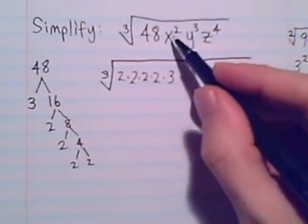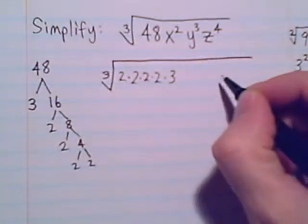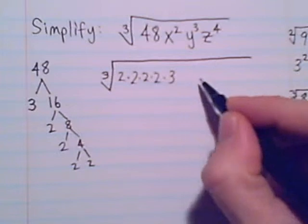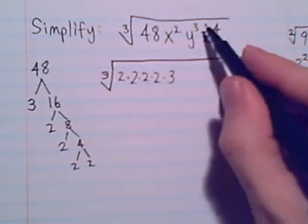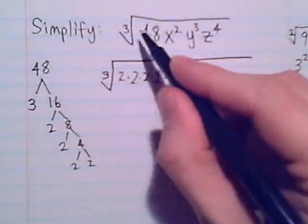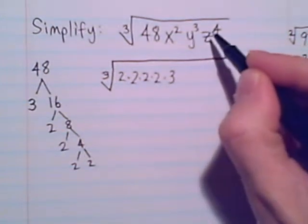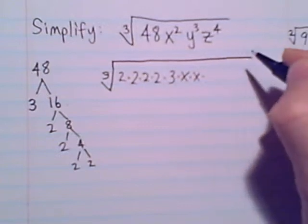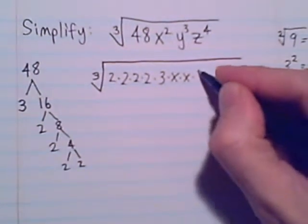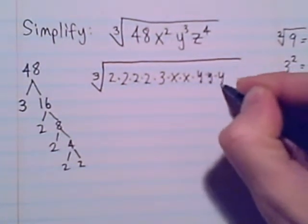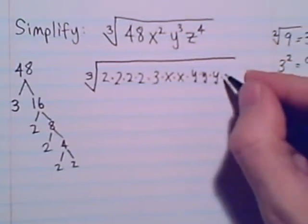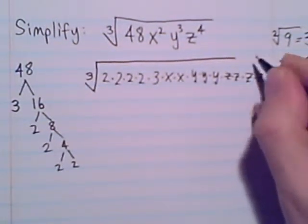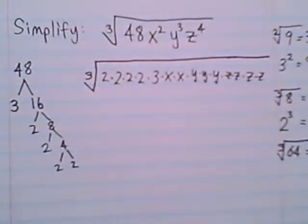I get to the variables, and I'll still write things in expanded form, but I can maybe see it without writing it all expanded. Just remember, with a cube root, now I'm thinking about how many sets of 3 will I find? I'll go ahead and write expanded. x times x, we have 3 y's and 4 z's.